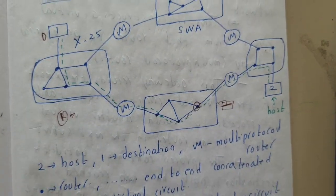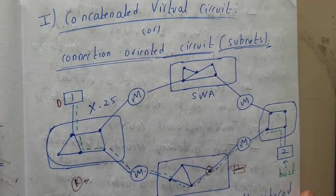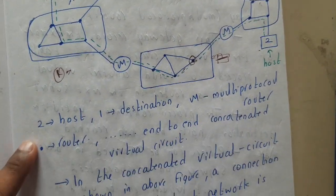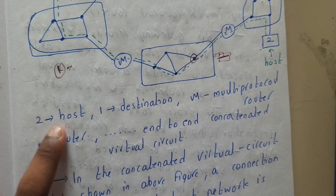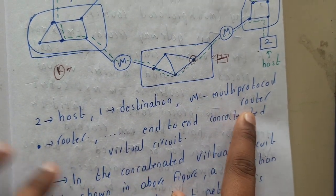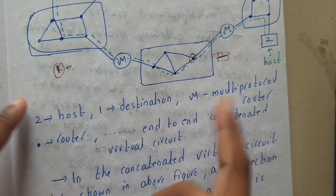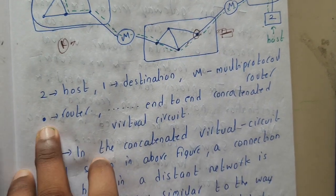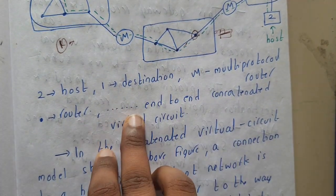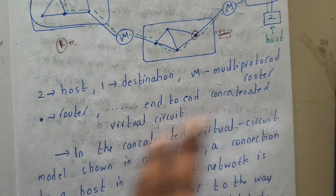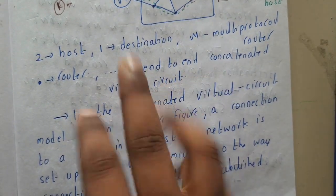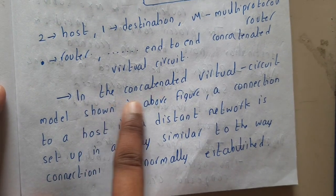So that is how the diagram works. To recap: H is the host, D is the destination, M is the multi-protocol router which can handle multiple protocols at a time, and the dots represent regular routers. This is also called an end-to-end connection-oriented model.